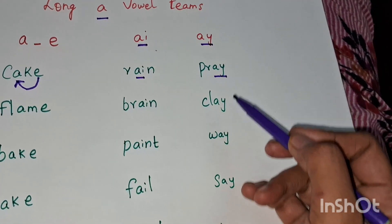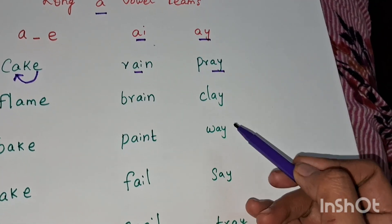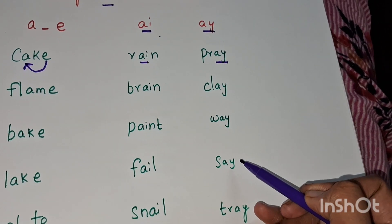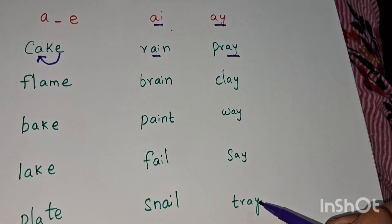A-Y always comes at the end of the word. Examples: pray, clay, way, say, tray.